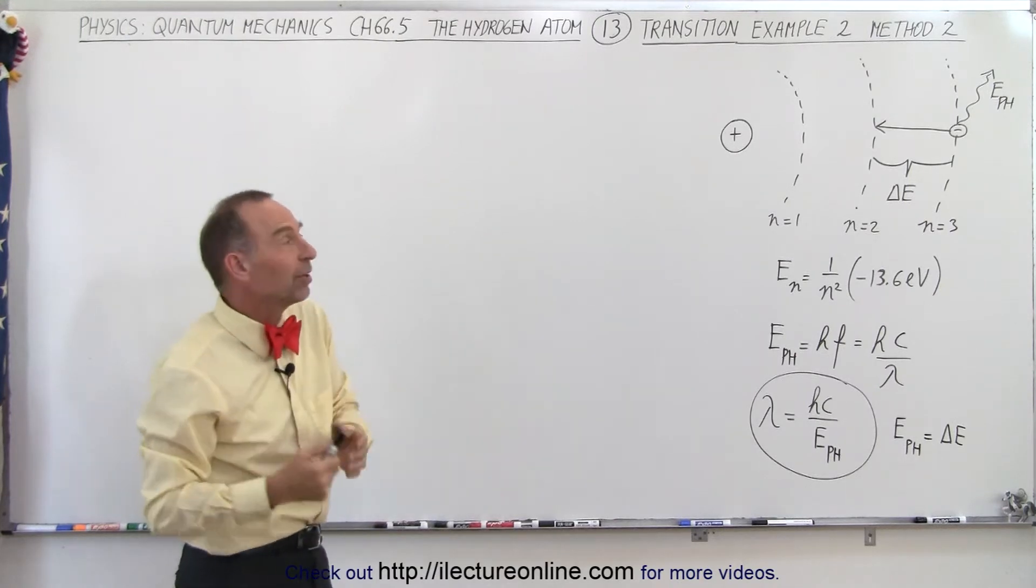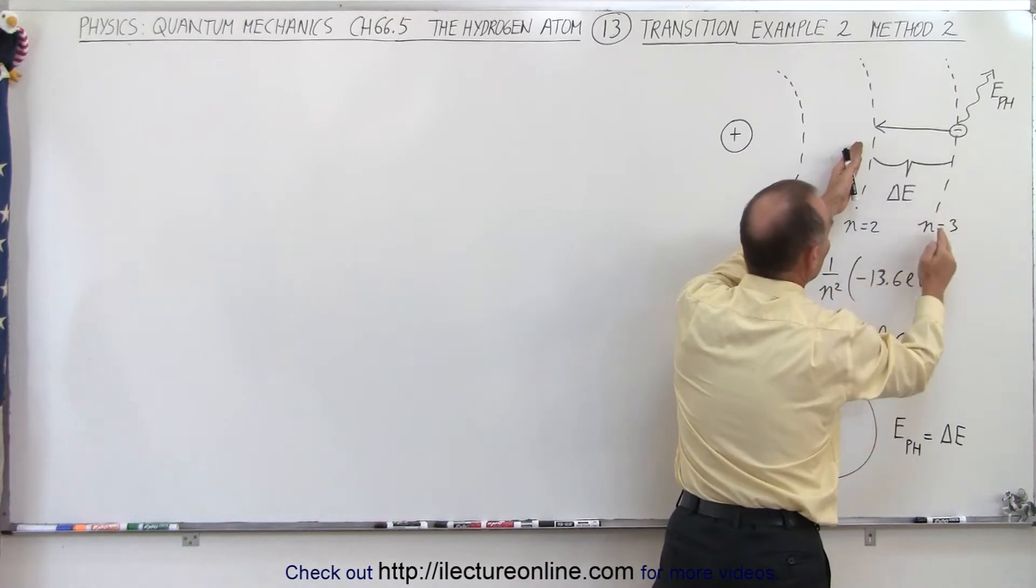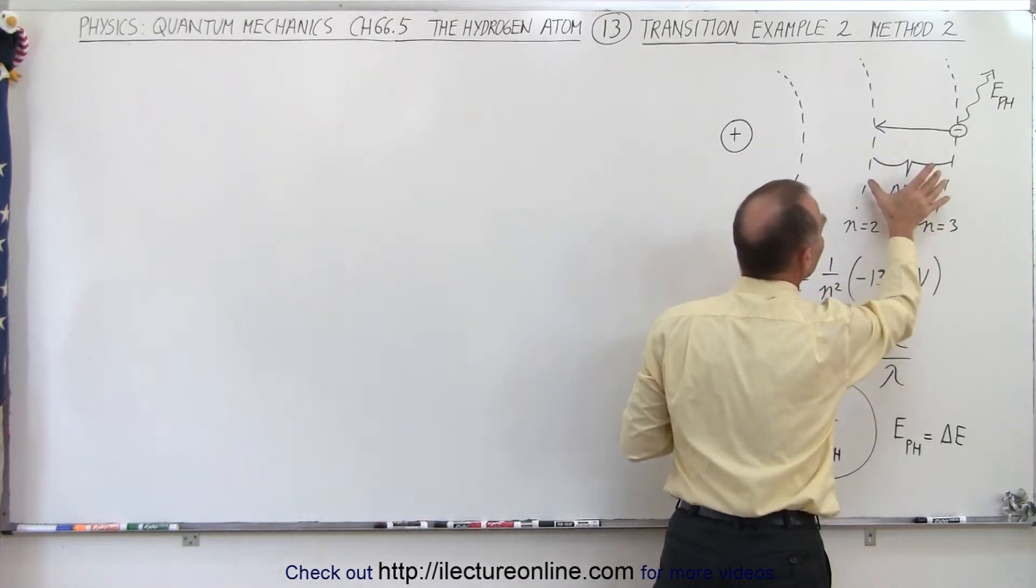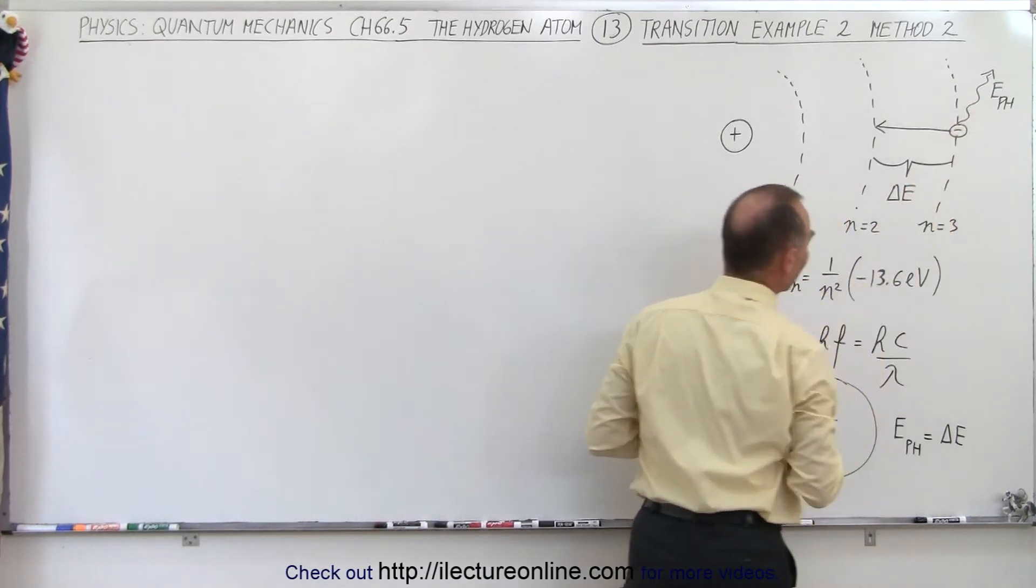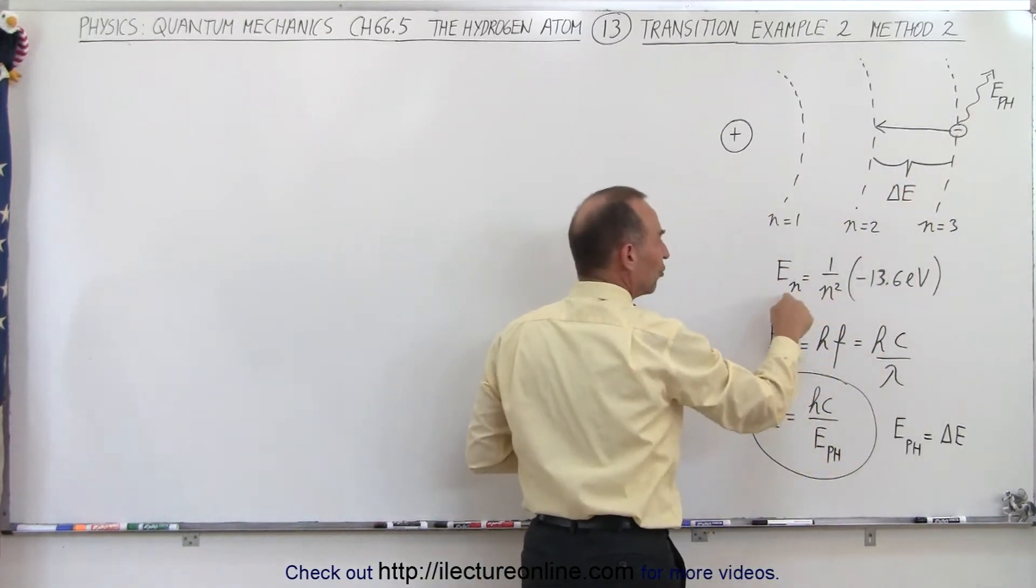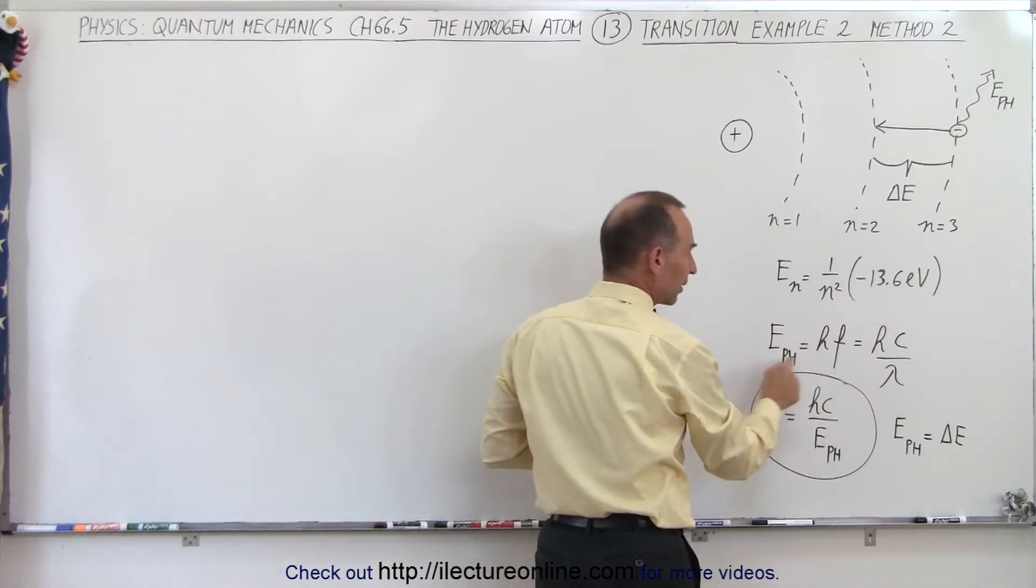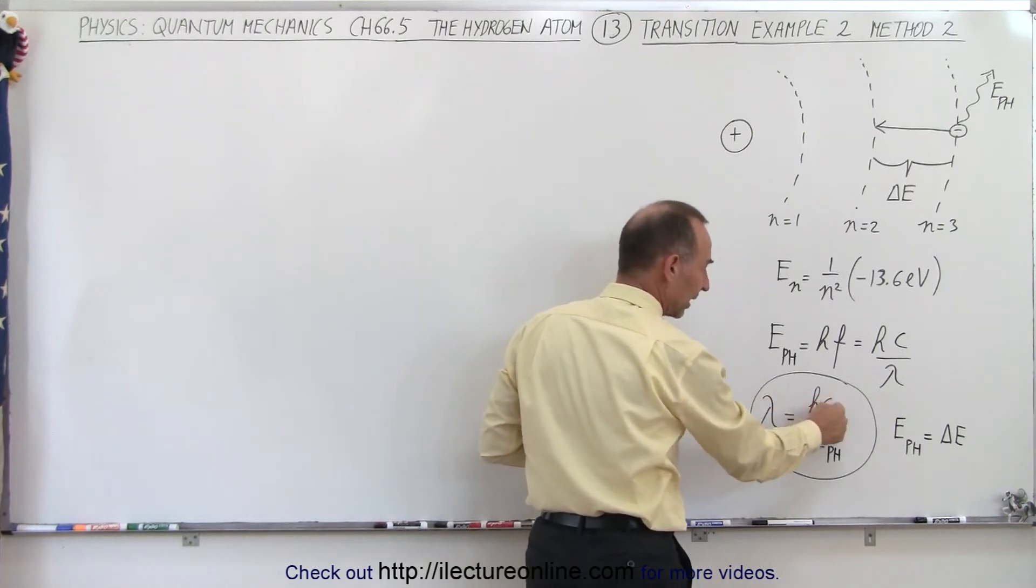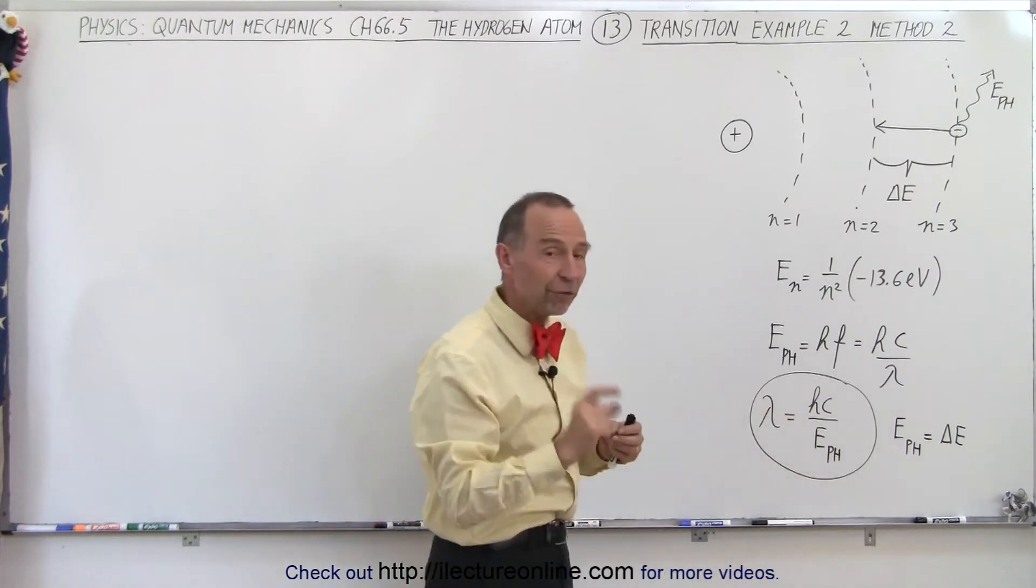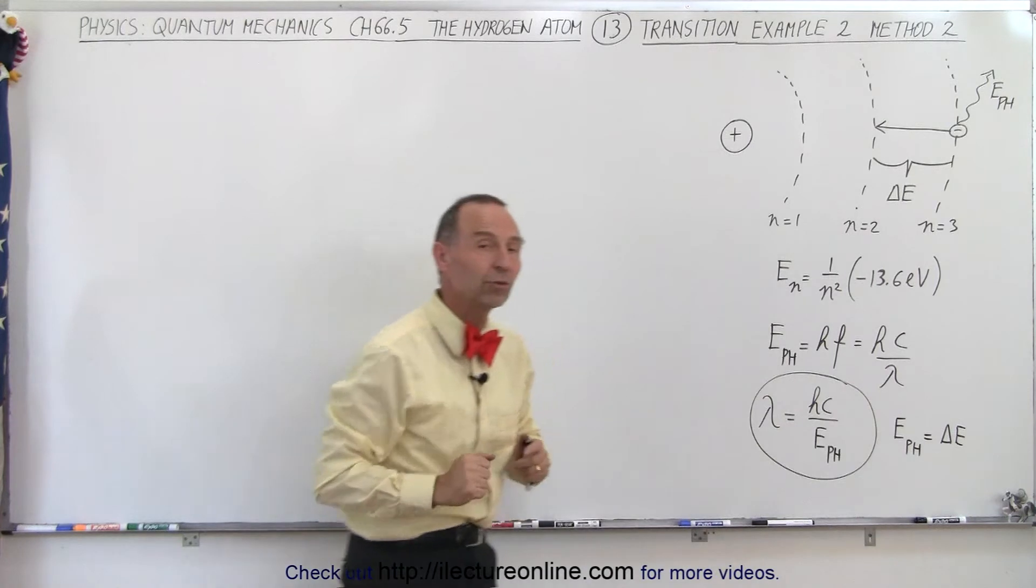The principle is the same. We need to calculate the energy difference between the two levels, between n equals 3 and n equals 2. That energy difference will equal the energy of the photon being released. The wavelength of the photon is equal to h times c, Planck's constant times the speed of light, divided by the energy of the photon, which equals the energy difference between the two levels.